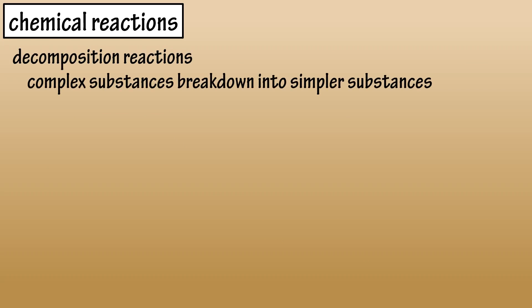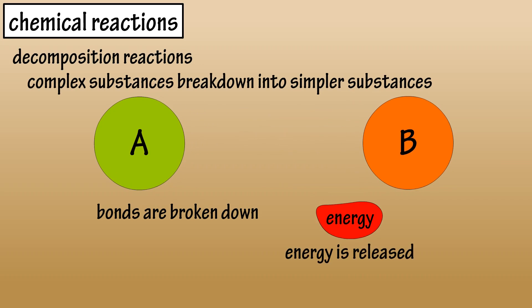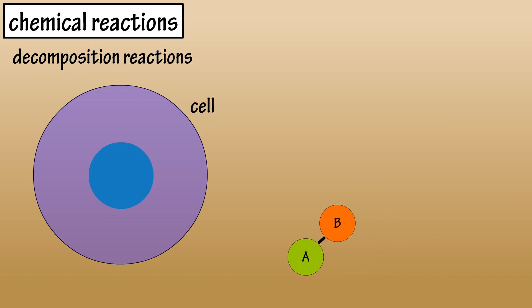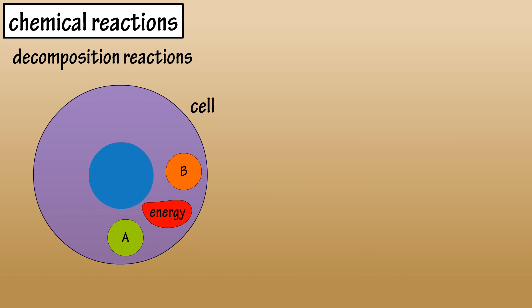Decomposition reactions are when more complex substances break down to form simpler substances. Bonds are broken and energy is released, either as heat or captured and stored for future use. The formula is: substance AB breaks down to A plus B plus energy. An example is when a complex nutrient is broken down in a cell to release energy for other cellular functions.